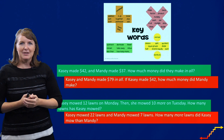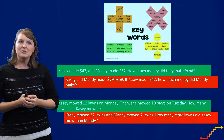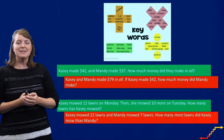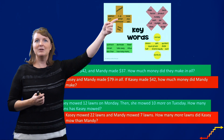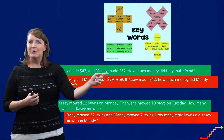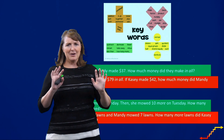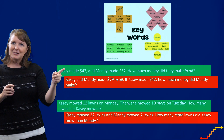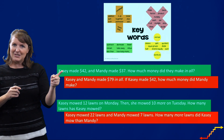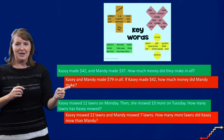But look at this one: Casey and Mandy made $79 in all. If Casey made $42, how much money did Mandy make? Here's 'in all,' so I'm going to add — but when I add 79 and 42, we are not going to get the correct answer. So here's an example where the key term 'in all' works, and here's an example where 'in all' doesn't work.